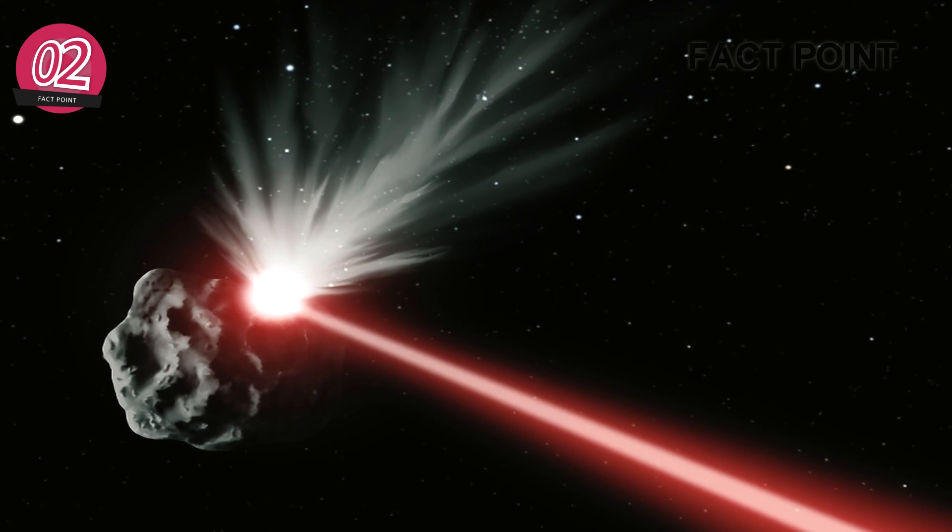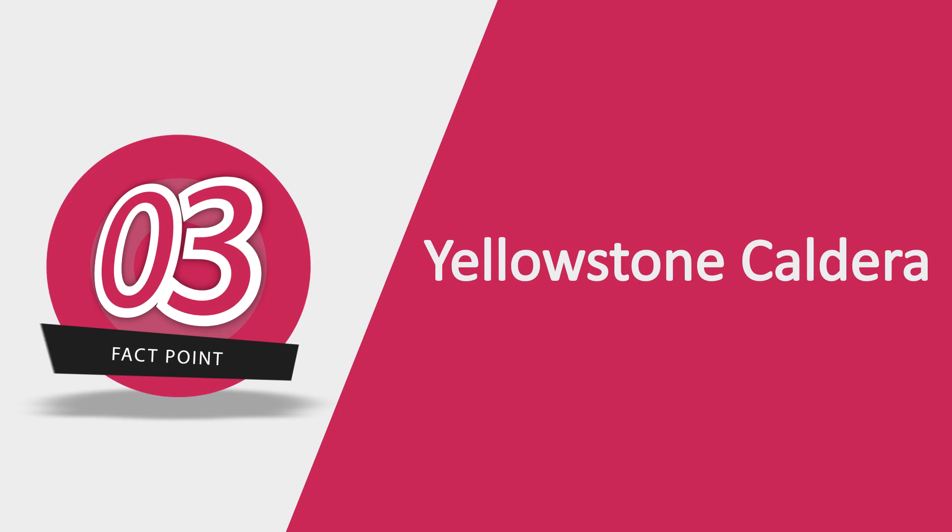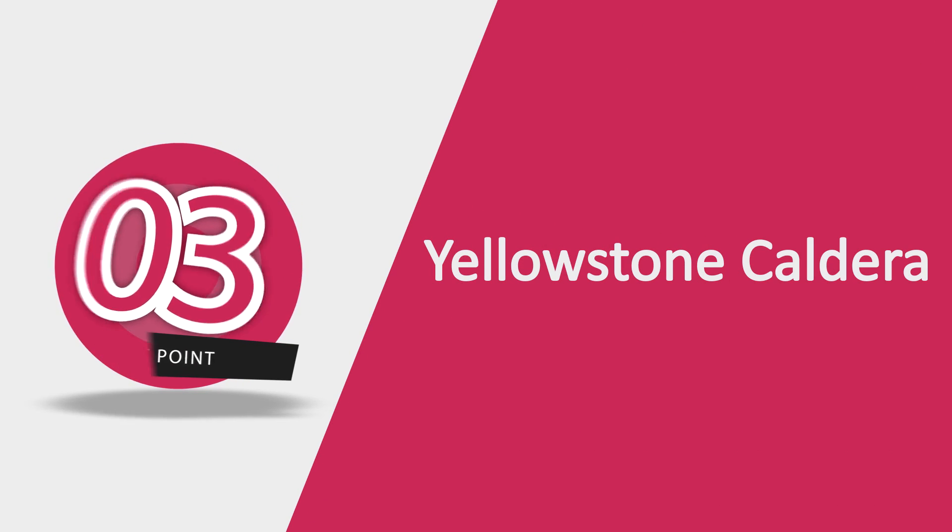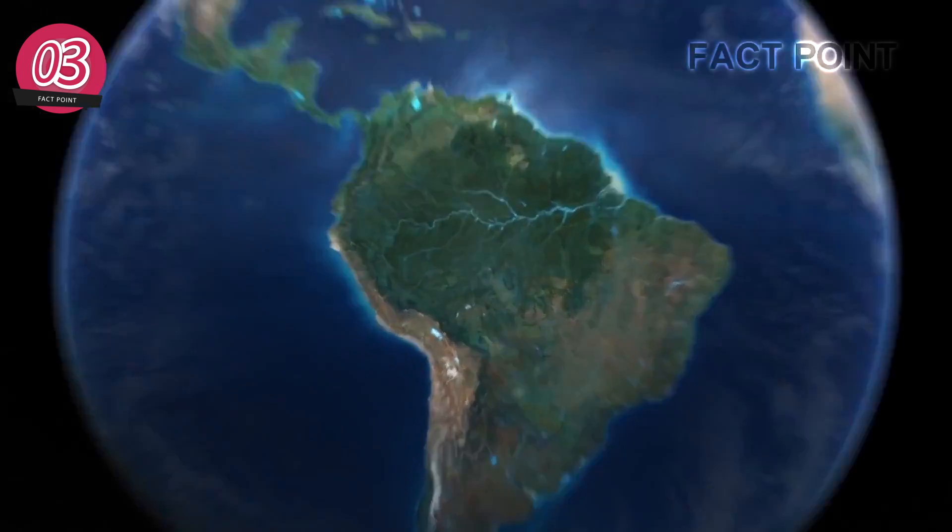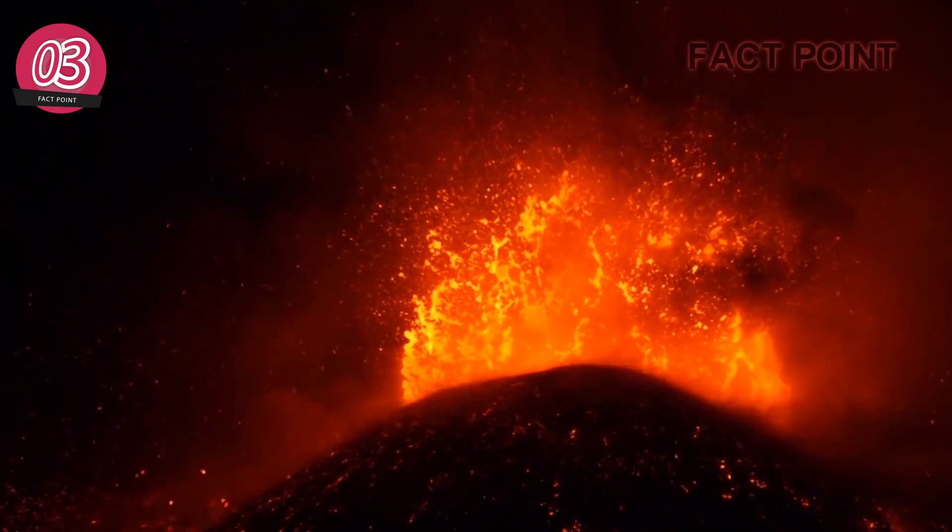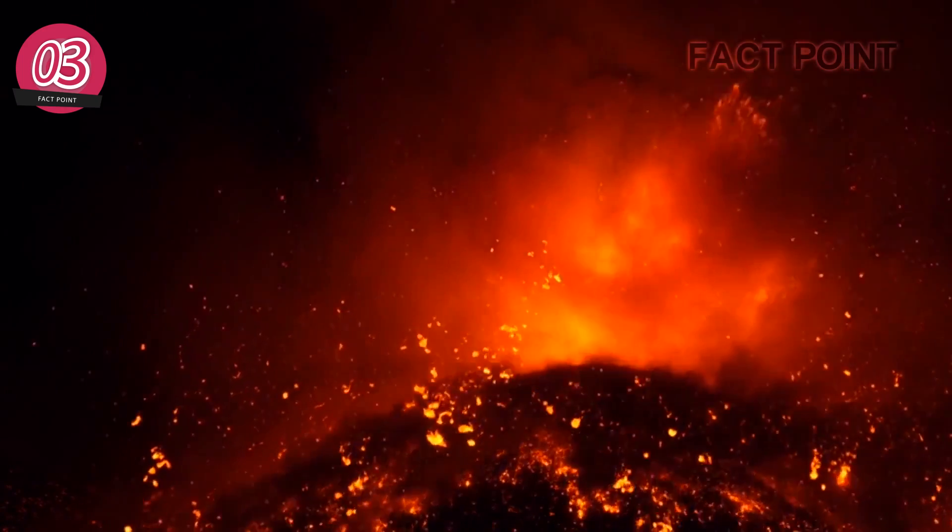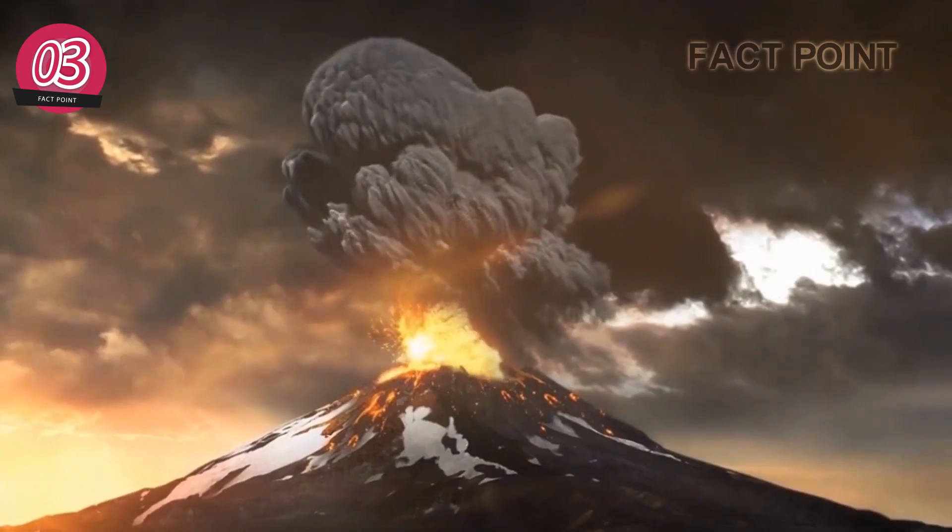Our list is not over yet, keep watching. Number 3: Yellowstone Caldera. No list of catastrophes is complete without mention of one of these volcanoes. Yellowstone Caldera may sound like a cute name but it is the name given to a volcano in Yellowstone National Park.